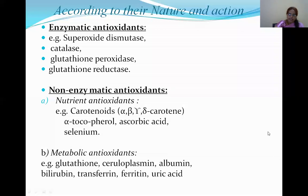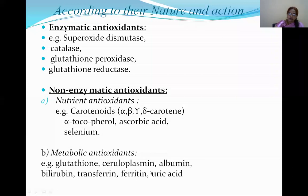Metabolic antioxidants include glutathione, ceruloplasmin, albumin, bilirubin, transferrin, ferritin, and uric acid. These are products formed in metabolism that show antioxidant properties.